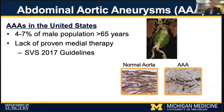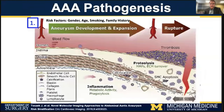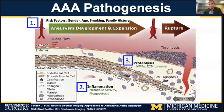Abdominal aortic aneurysms represent the pathological dilation of the aorta, and currently affect approximately 4% to 7% of the adult male population over the age of 65, and can predispose patients to the potentially fatal consequence of aortic rupture. Despite advances in surgical therapy over the last two decades, there remains an absence of a proven medical therapy to prevent aortic aneurysm progression and eventual rupture. Lessons learned from animal models and human tissue samples have revealed that AAA develops due to patient-specific risk factors including gender, age, smoking, and family history, inflammation within the aortic wall, and extracellular matrix degradation via proteolysis and smooth muscle cell apoptosis.